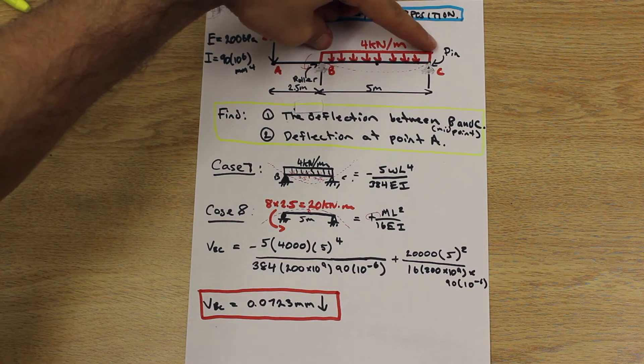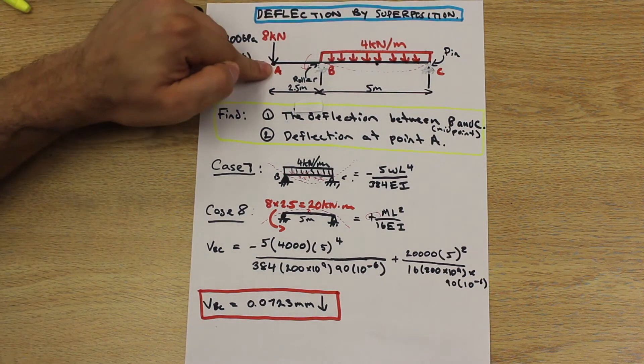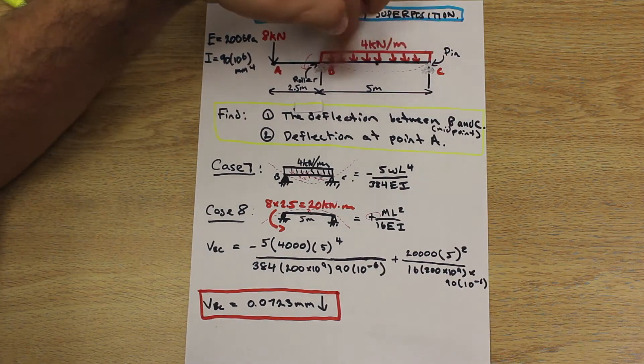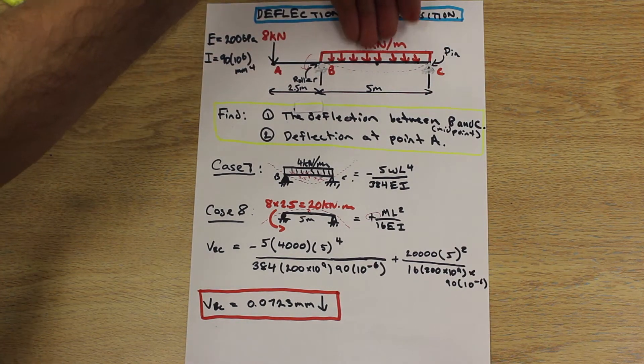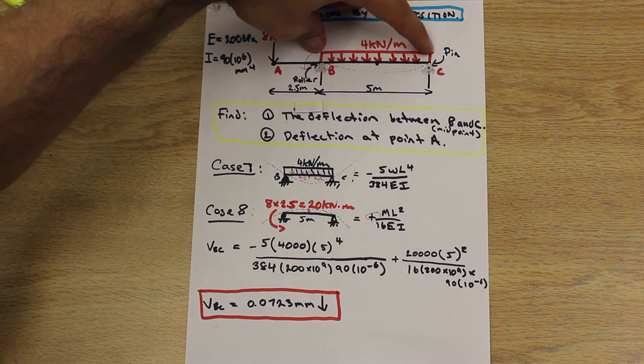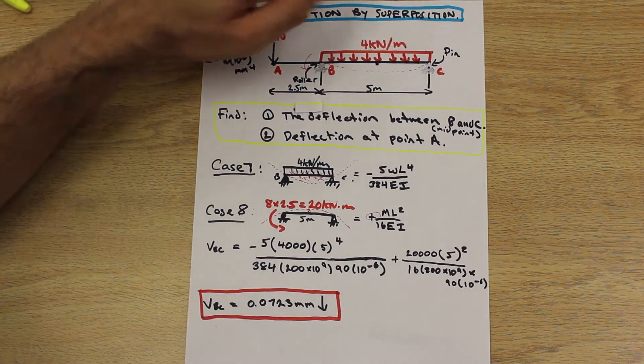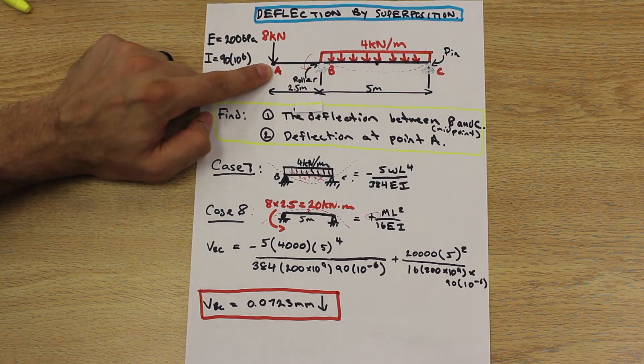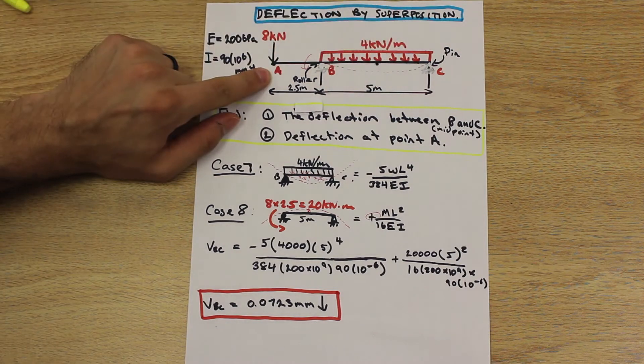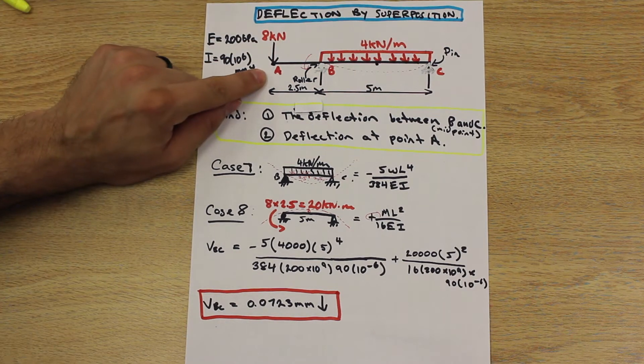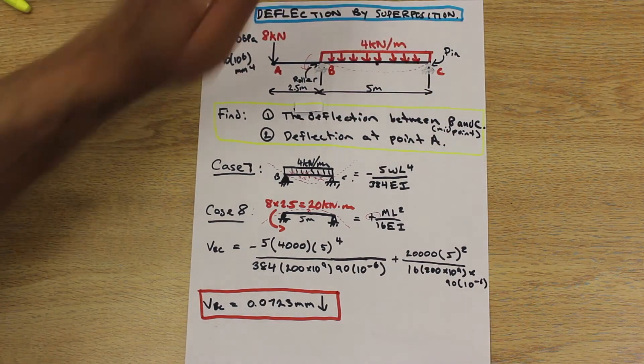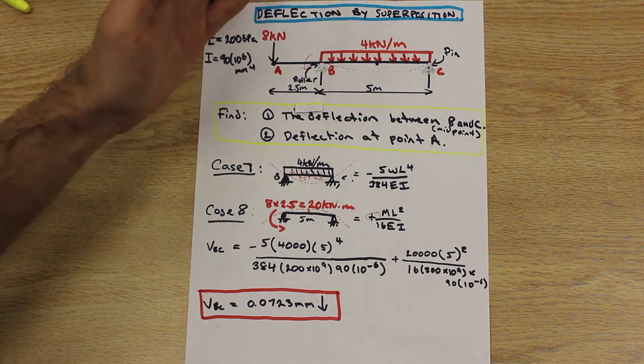Whenever you're working with any superposition question and you have a load that's not directly acting at the point that you're interested in, before when we were finding the point between B and C, this load was directly pushing on the midpoint at B, C, so we could measure it directly using case 7. However, now when we're analyzing point A, this load is no longer directly pushing on point A. It's indirectly affecting A by deflecting point B, C, or in between here. That's something we're going to consider, and I'll explain that when we get there.